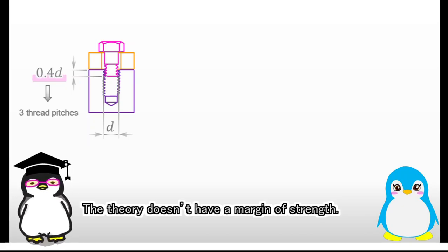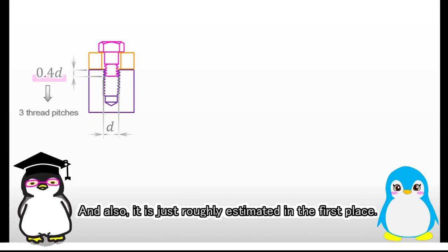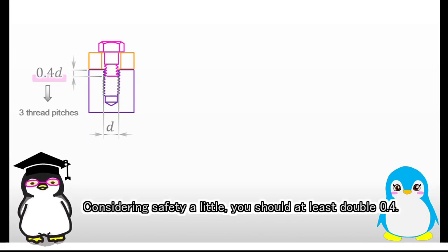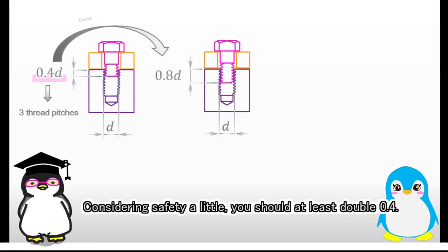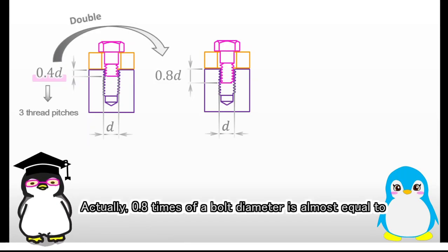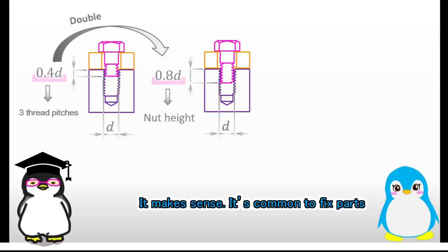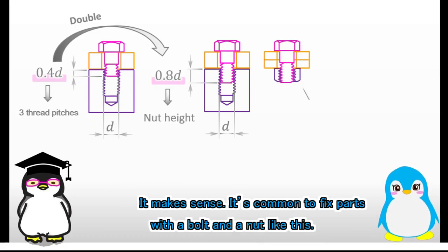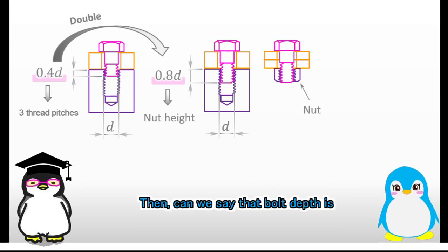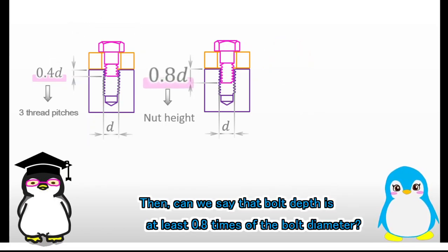The theory doesn't have a margin of strength. And also, it is just roughly estimated in the first place. Considering safety a little, you should at least double 0.4. Actually, 0.8 times of a bolt diameter is almost equal to the height of the nut. It makes sense. It's common to fix parts with a bolt and a nut like this. Then, can we say that bolt depth is at least 0.8 times of the bolt diameter?